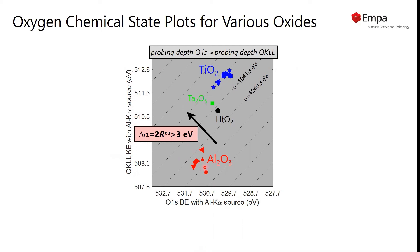The Auger parameter is constant or is changing along the line with slope 1. So here the dashed lines indicate the Auger parameter change.